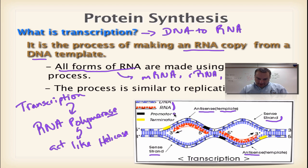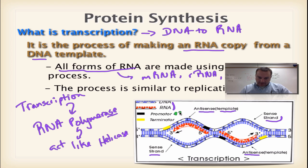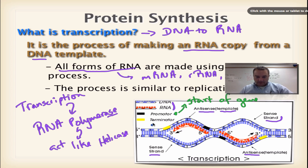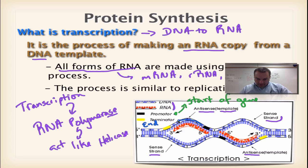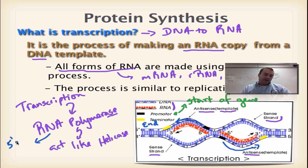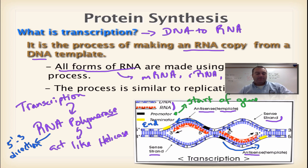Pay attention down here to the promoter — that tells you the start of the gene. Then we have the terminator, which tells you the end of the gene. RNA polymerase always moves in the 5' to 3' direction, just like DNA polymerase during replication. We're going to go over this in more detail — this is just priming you for what's going to happen in the rest of the screencast.